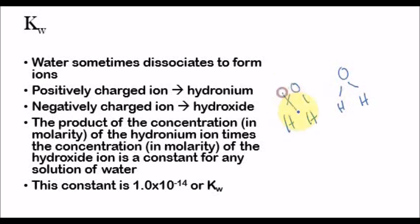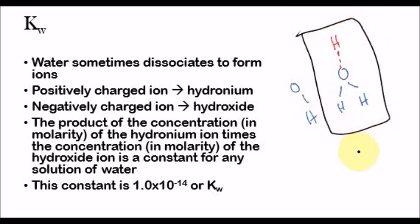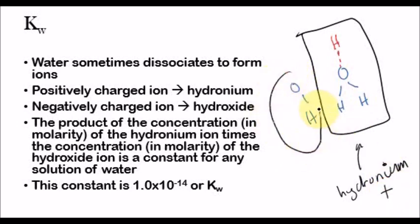That covalent bond is broken, and that hydrogen atom will drift to another water molecule and bond to it. It will bond to the oxygen side of the other water molecule because that hydrogen atom will have a positive charge. The complete ion formed is called hydronium, and it has a positive charge. The other ion is called hydroxide, and it has a negative charge.